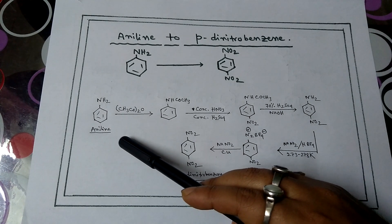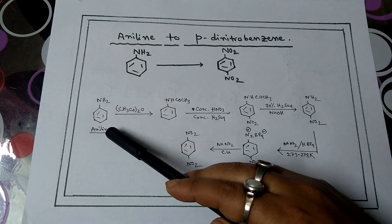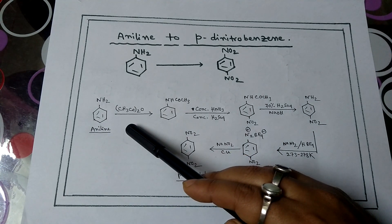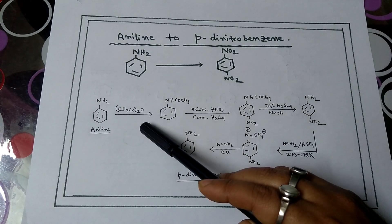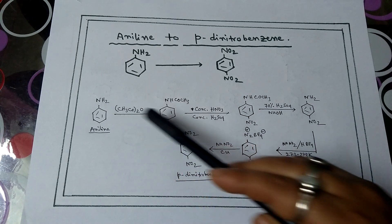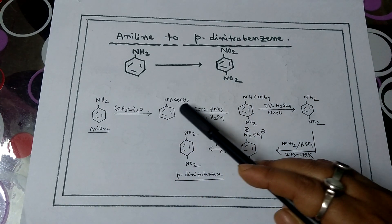So the conversion is: aniline with benzene ring and NH2, then add CH3CO2O. Then the NH2 group is blocked, forming NHCOCH3.